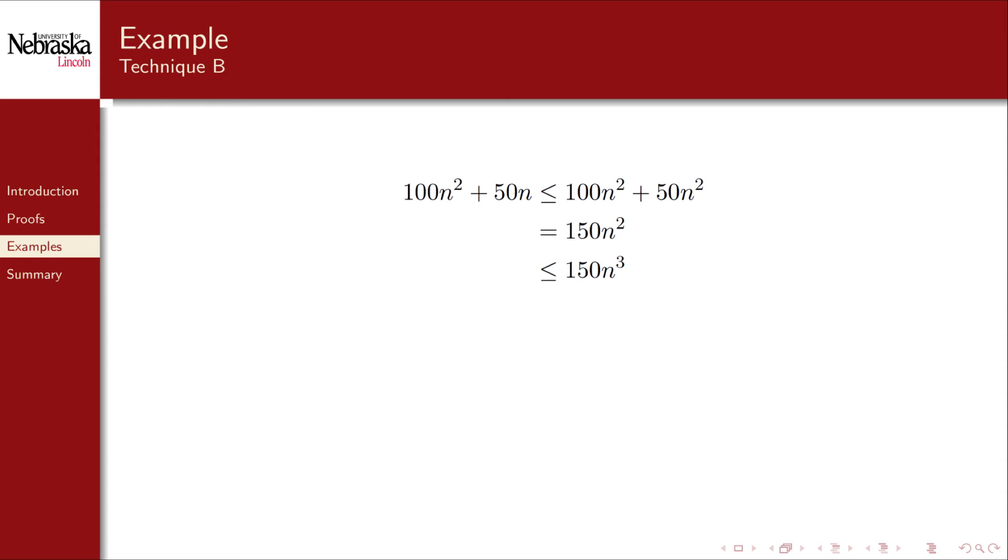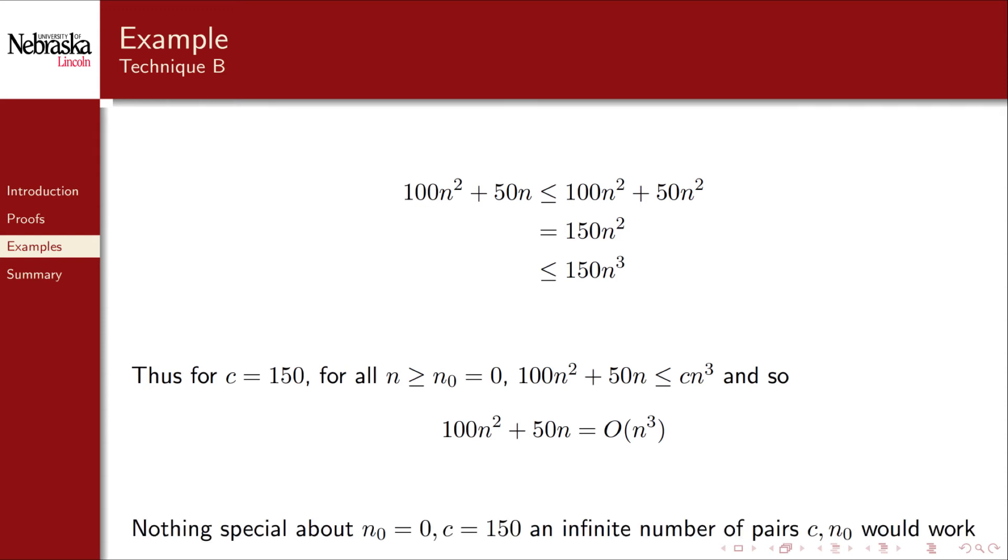At this point, we've derived the inequality that we were seeking. For c being 150 and for all integer values n greater than or equal to 0, the inequality holds and we've proven the big O relationship. There was nothing special about these two values. In fact, there are an infinite number of pairs that would have satisfied the inequality. In fact, we illustrated eight such possible pairs in our previous visualization. All you need to do is find at least one pair.